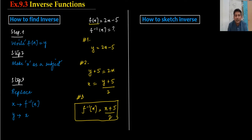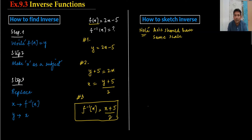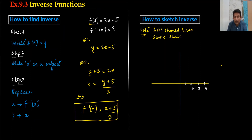Now let's talk about sketching the inverse function. Before starting the sketch, one very important thing to note: the x-axis and y-axis should have the same scale. Same scale means the distance on the x-axis and y-axis should be equal. For example, if x goes 1, 2, 3, 4, then y should also be spaced 1, 2, 3, 4 with the same distance. This is very important.